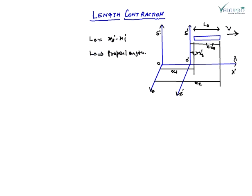Similarly, for frame S: if the same rod, which is in S dash frame moving with velocity V, is observed from frame S, then its length L will be L = X₂ minus X₁. This is equation number two, and the proper length equation is equation number one.